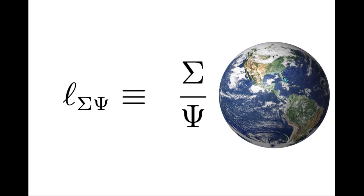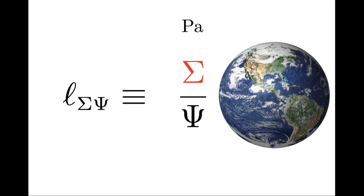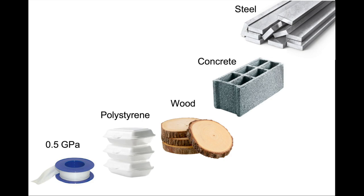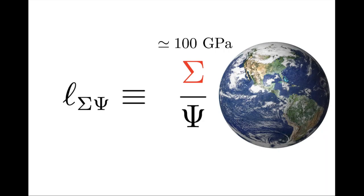Let's take the earth as an example. The dimensions of stress are m·l⁻¹·t⁻², expressible in Pascals. Different materials have different elastic moduli: Teflon around 0.5 GPa, polystyrene 3 GPa, wood 10 GPa, concrete 30 GPa, steel 200 GPa. The earth is made of a third iron, and its average modulus is around 100 GPa, that is 10¹¹ Pa. For the force density psi, with dimensions m·l⁻²·t⁻², this is a force per unit volume — three cells apart from force in the table. Psi is a force density, analogous to how rho is a mass density.